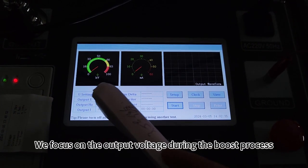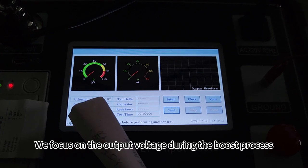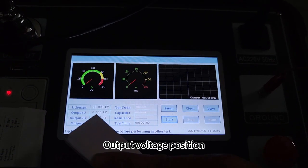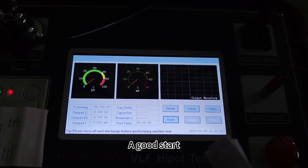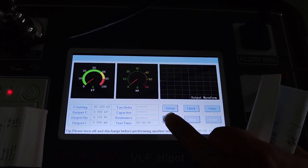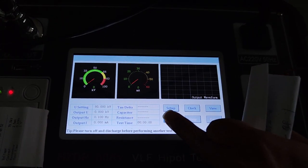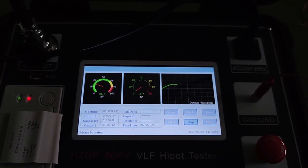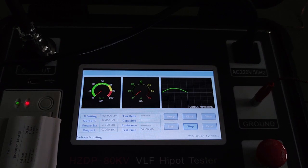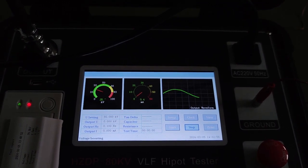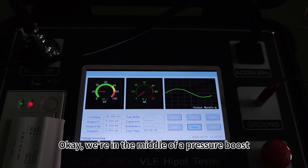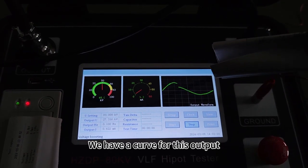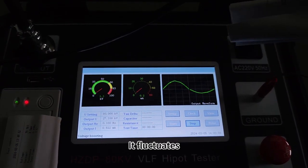We focus on the output voltage during the boost process. Output voltage position. A good start. Okay, we're in the middle of a pressure boost. We have a curve for this output that fluctuates.